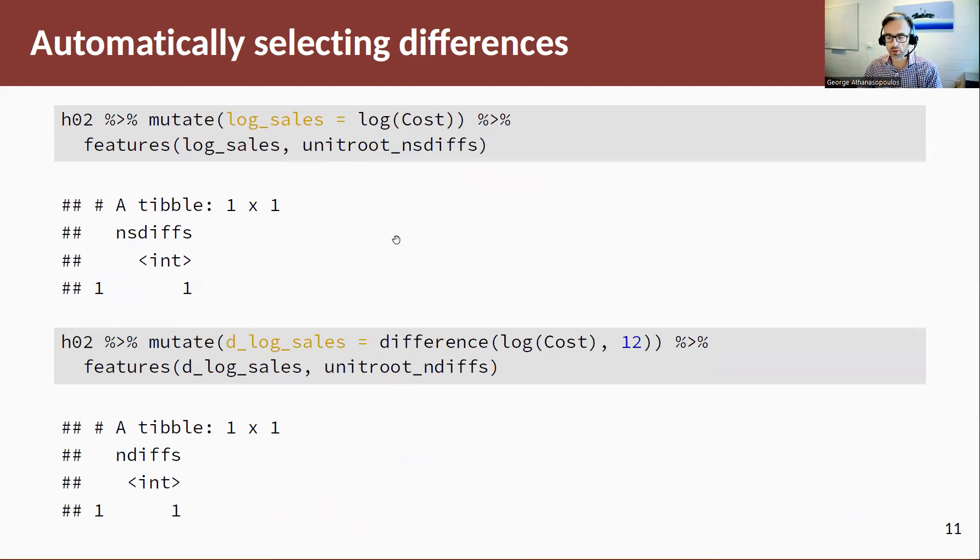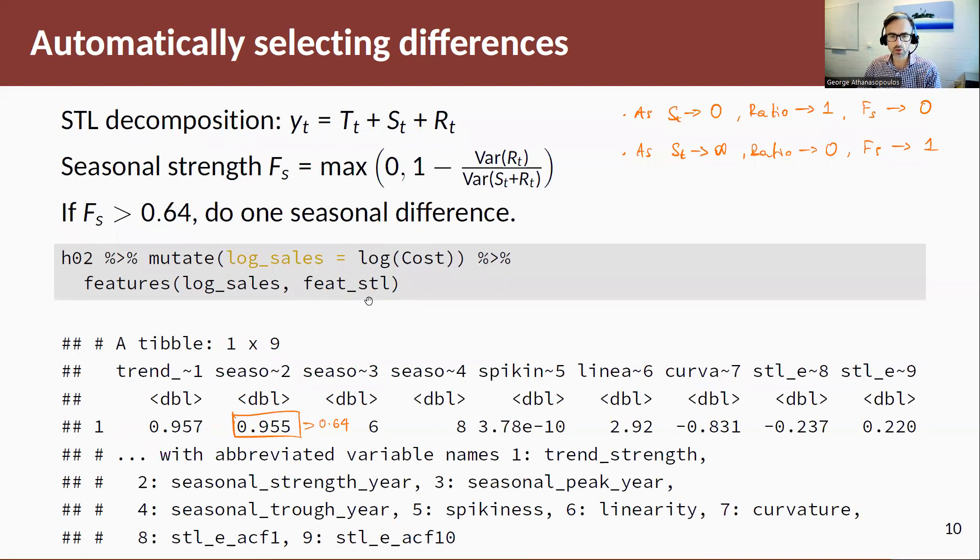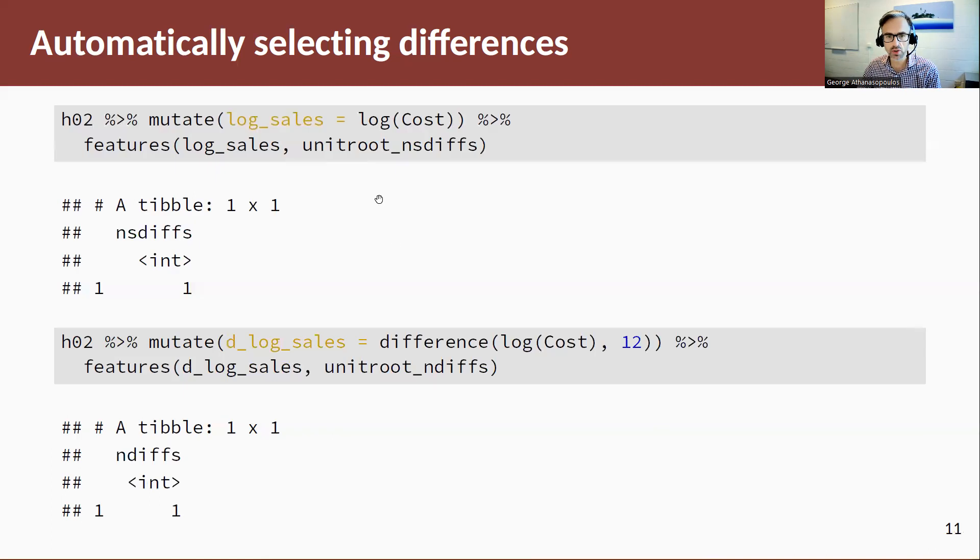This can be automated. If you don't want to look at the actual features themselves or the values of those features, you can actually call upon unit root underscore NS, number of seasonal differences, and that will tell you how many differences you need to make. So it automatically compares the seasonal strength to 0.64 and it says you need to take one difference. And this is for the log of the cost of the data.